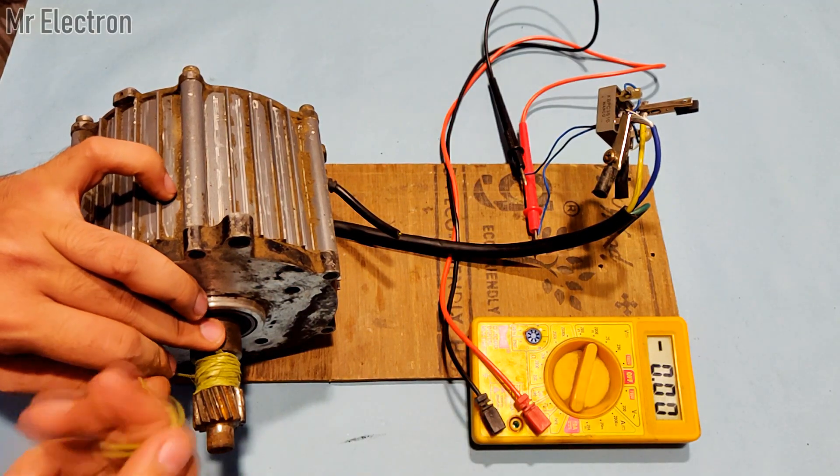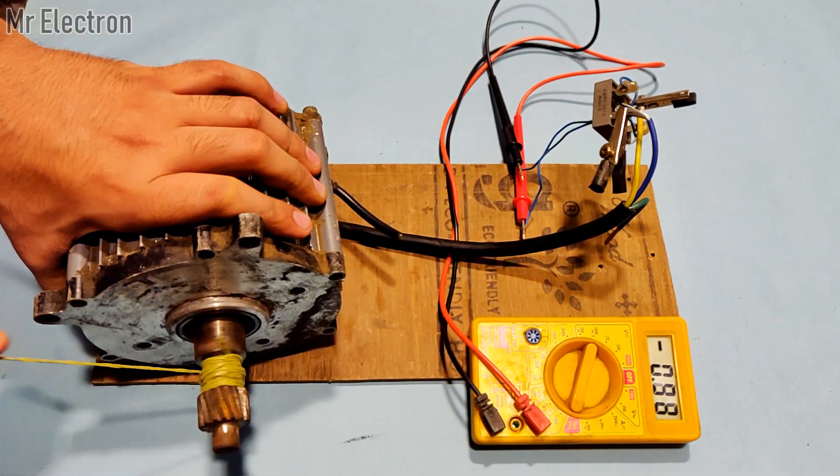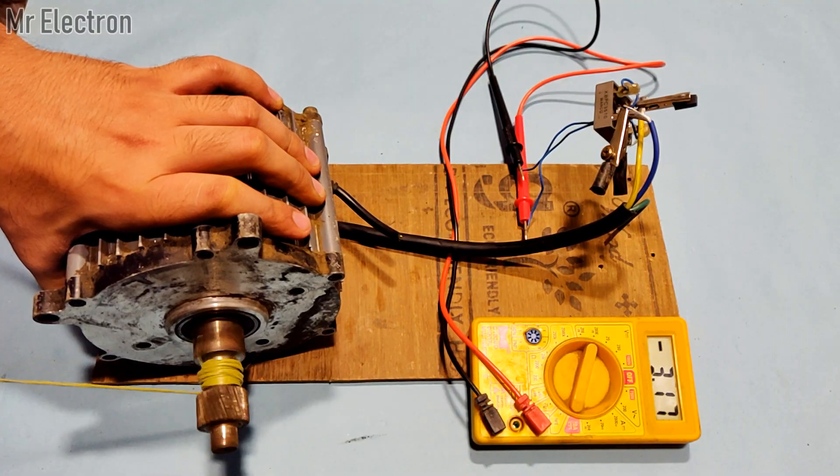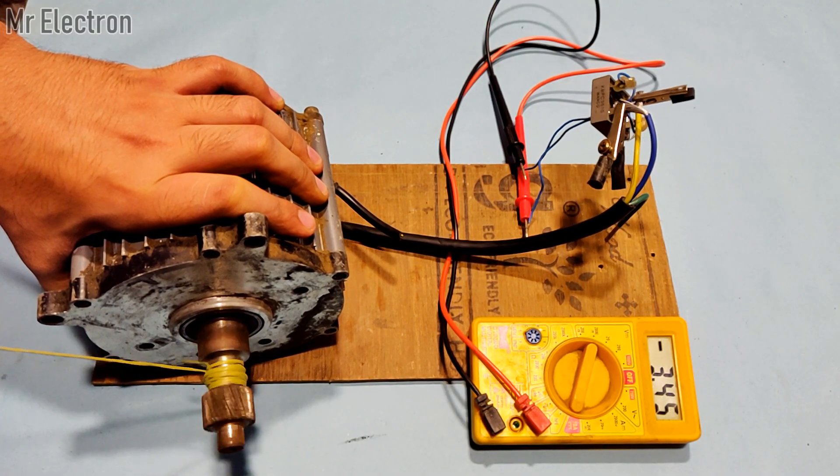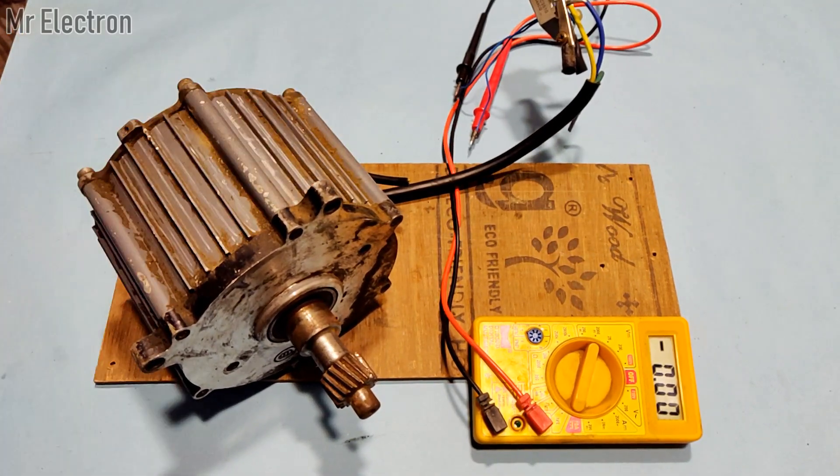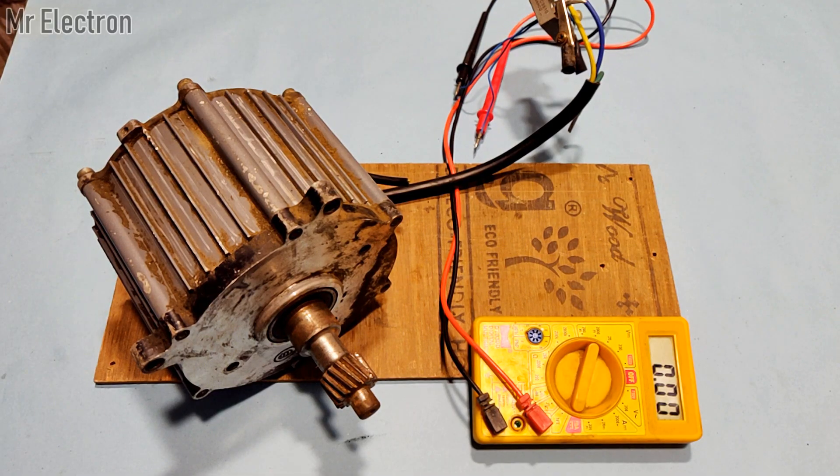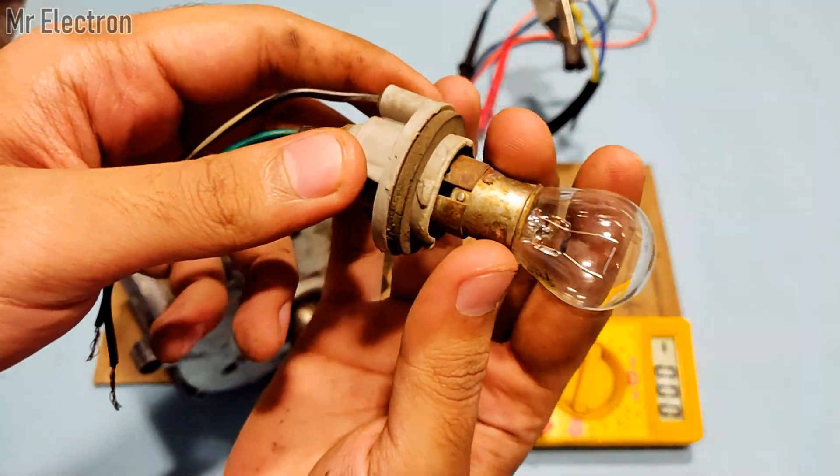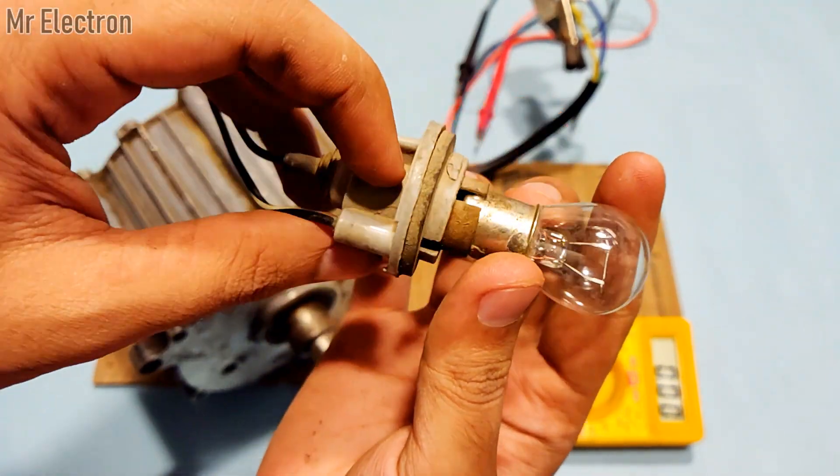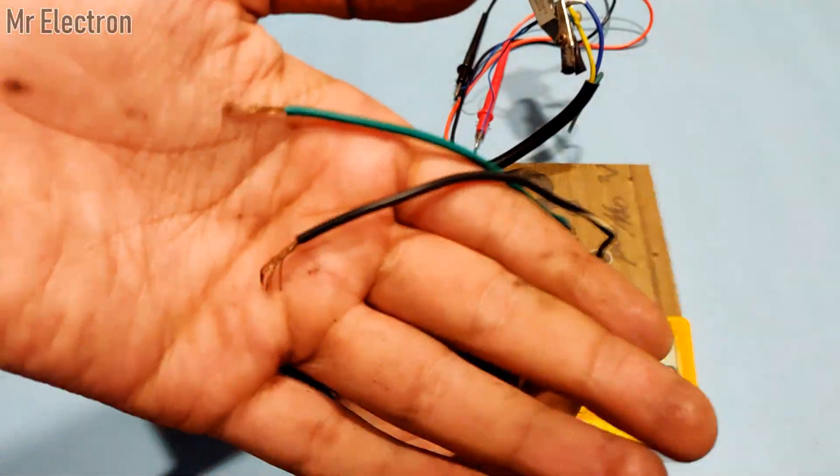I will conduct the same test with rope rotation. You can see that the output current measurement gives an improved reading with the rope because it is easier to rotate the shaft this way. The maximum current spike that I could achieve was 3.89 amperes, which is almost 4 amperes.